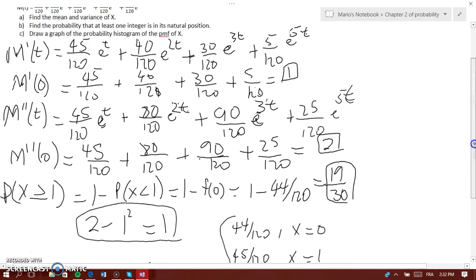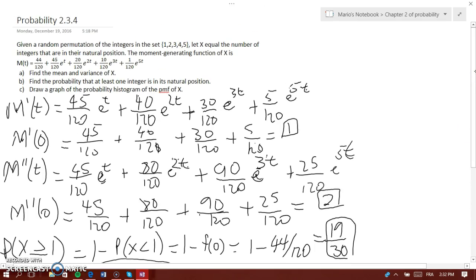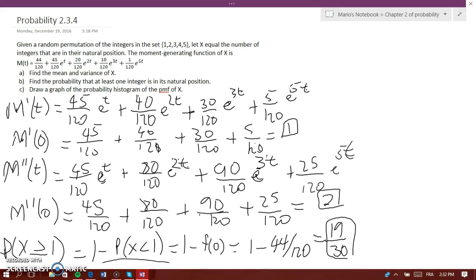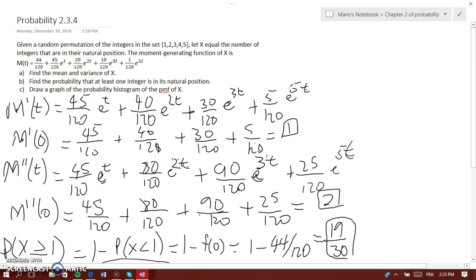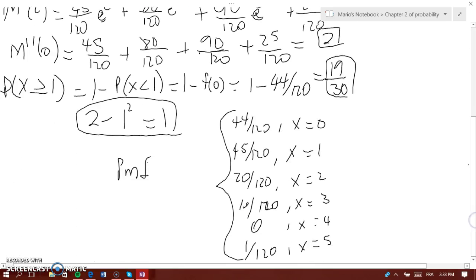Why 0 for 4? Because you have 44 over 120, 45 over 120 - so you have 0, 1, 2, 3. But for the fourth one, there is no coefficient for it. So it's like after you go to 10 over 120 e to the power of 3t, you get plus 0, plus 1 over 120 e to the power of 5t. But we don't need to write the 0, so we just don't write the 0. That's what it actually is, and this is why you need to do the PMF sometimes to understand why such a number is what it is.